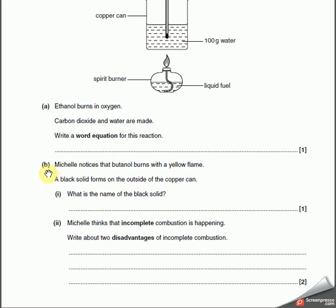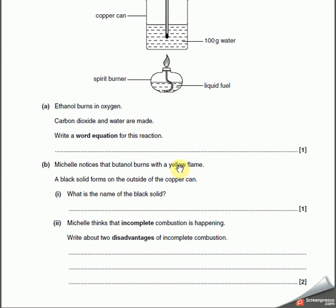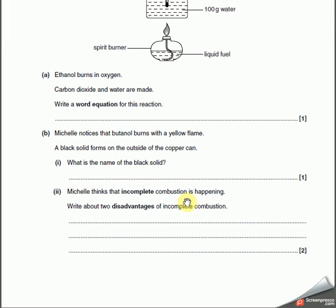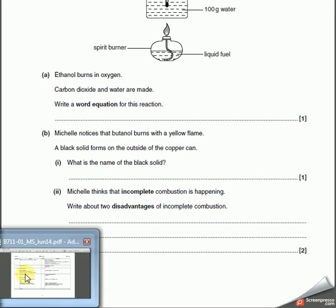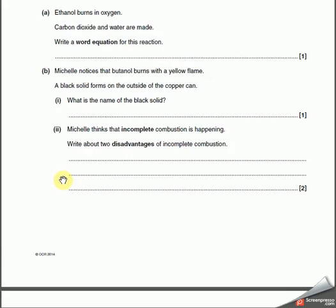Michelle notices that butanol burns with a yellow flame. A black solid forms on the outside of the copper can. What is the name of the black solid? That must be soot, or you can say it's carbon. Because it's a yellow flame, it's giving you a clue, so it must be incomplete combustion. Michelle thinks incomplete combustion is happening, just like we just said. Write about two disadvantages of incomplete combustion. That's easy. You know incomplete combustion makes carbon monoxide, and that is poisonous. That's one disadvantage. And number two is incomplete combustion, so it's not burning all the fuel. So it's not going to be releasing as much energy. Let's have a look. Soot produced, less energy like we just said, poisonous carbon monoxide made. Easy peasy, two of the things we've just said.